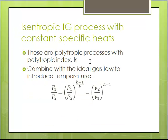We've got a polytropic process with polytropic index k, C_P over C_V for an ideal gas. If we combine that with the ideal gas law to introduce temperature, I end up with this expression here.